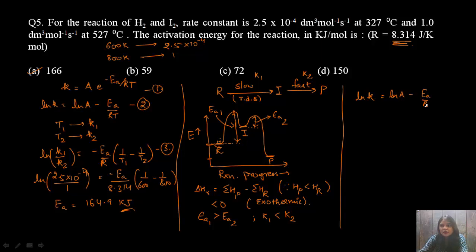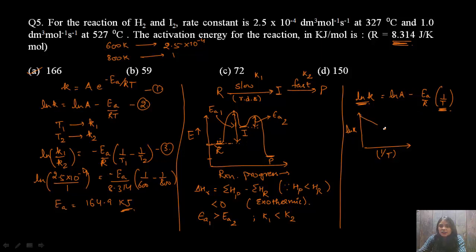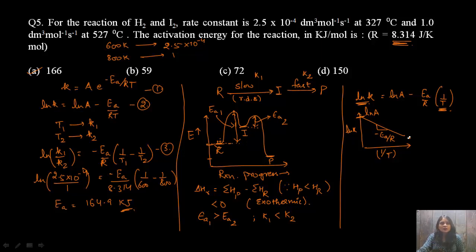From lnK = lnA − (Ea/R)(1/T), a graph of lnK versus 1/T is a straight line with negative slope −Ea/R, and y-intercept lnA. So activation energy can be calculated from the slope of this graph if it is given in the question. I'll be sharing more videos in the coming days — please like, share, and subscribe if you found this helpful. Thank you for watching!